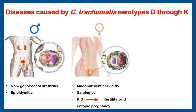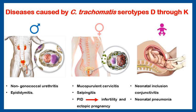In females, these serotypes affect the cervix causing mucopurulent cervicitis, affect the fallopian tubes causing salpingitis, and may affect the whole pelvis causing pelvic inflammatory disease. This may result in infertility and ectopic pregnancy. Also in babies, during birth while passing through the birth canal, it might cause neonatal inclusion conjunctivitis and neonatal pneumonia.